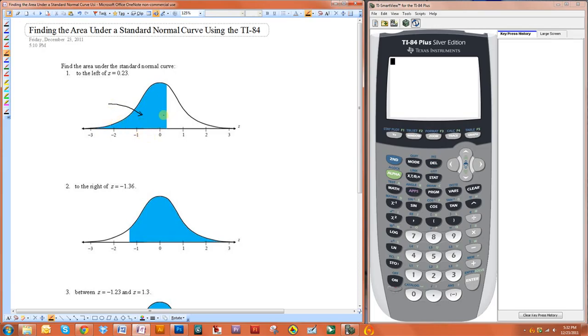What we need to do is figure out what the lower and upper bounds of our area are. So the area is going to be from all the way down here, which is negative infinity, up to 0.23.